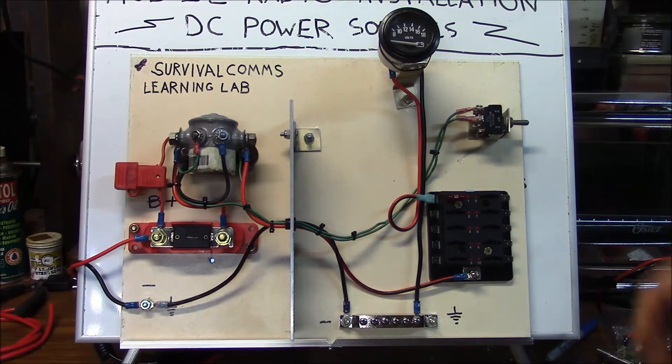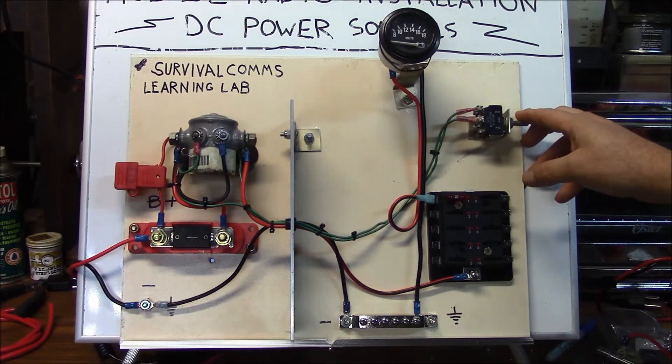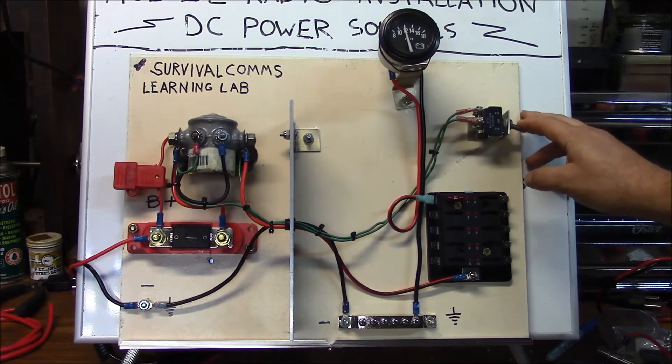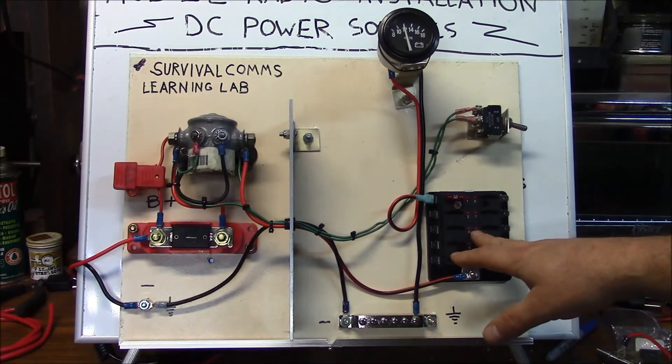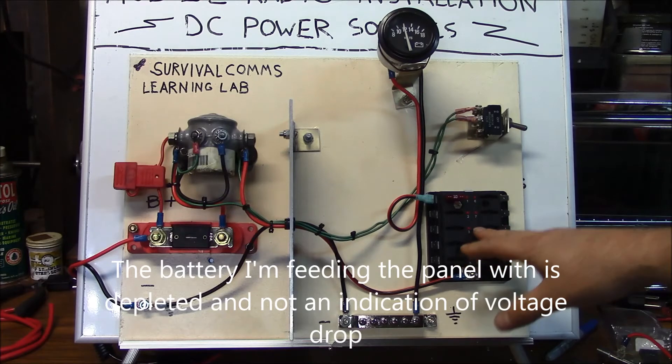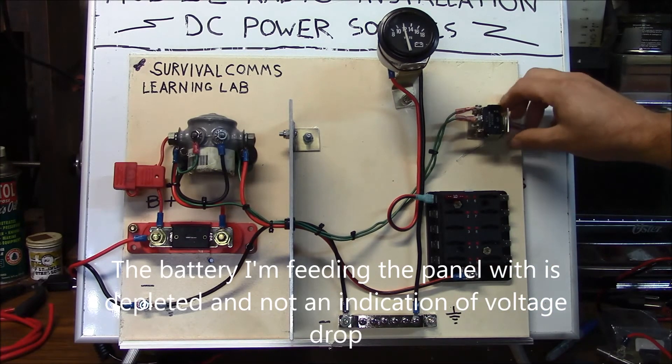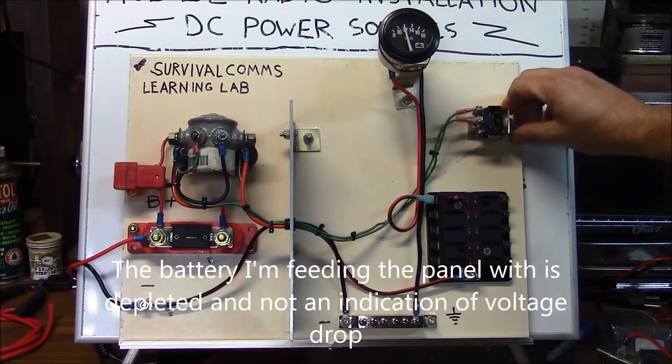Now in this example here, I have this toggle switch here. And this toggle switch controls my interior distribution panel. And then I can go ahead and secure my circuits with the flip of the switch.